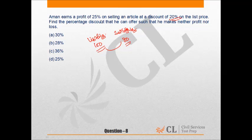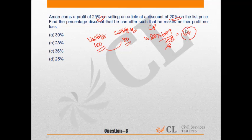It is also given that after selling that article at Rs 80 he earns a profit of 25%. From here we can say that the cost price would be 80 × 100 / 125, because 25% profit is earned. That gives us 64, so the cost price is Rs 64.